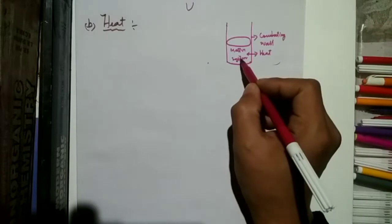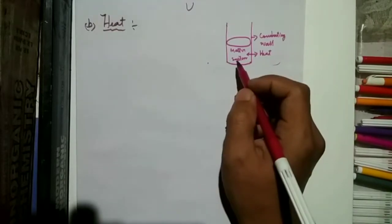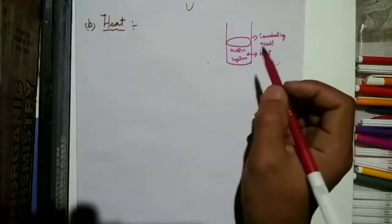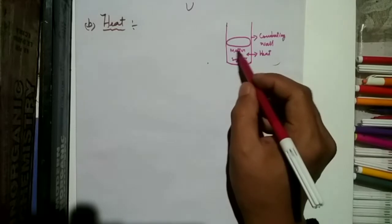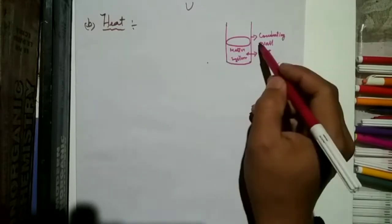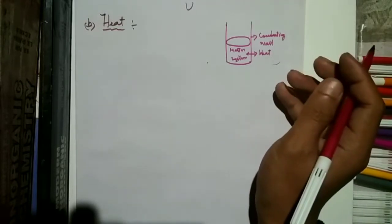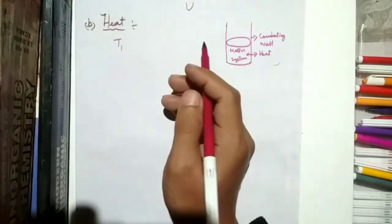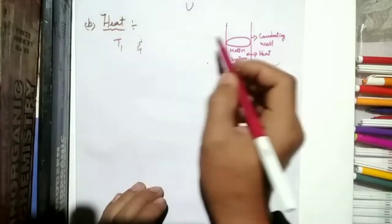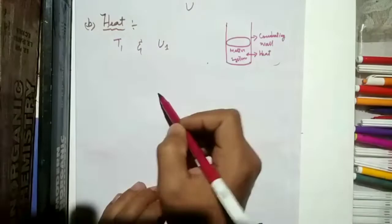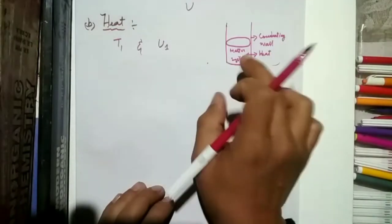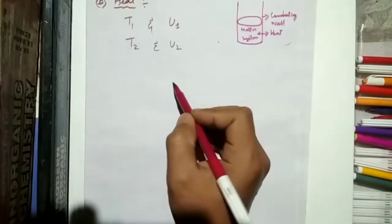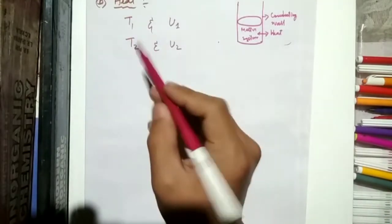We can change internal energy by transfer of heat — either from the surrounding to the system, or from the system to the surrounding — and as a result internal energy will change. Let us consider a system with matter, enclosed by a thermally conducting wall, so heat can be transferred. Initially the temperature is T1 and internal energy is U1.